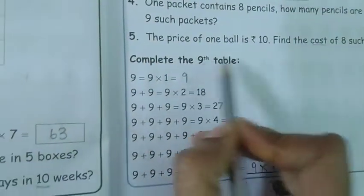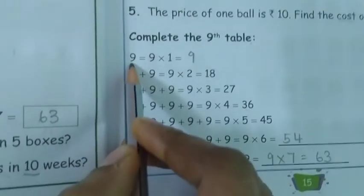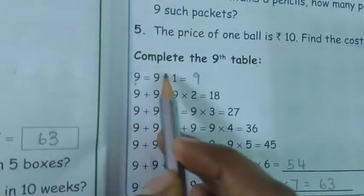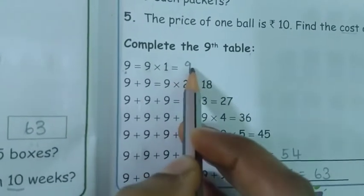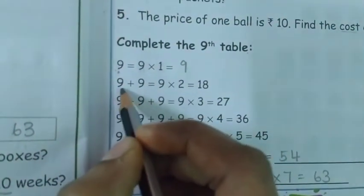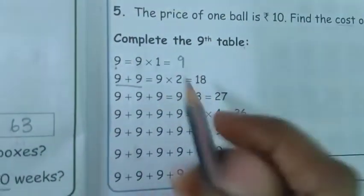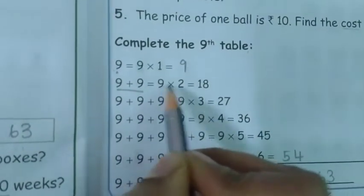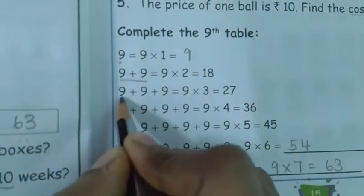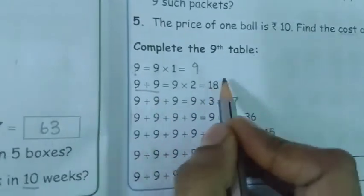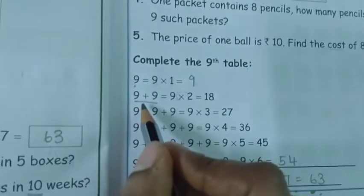Next, complete the ninth table. Here giving the number 9 only one time. 9 into one time — that means 9 ones are 9. Here, 9 plus 9, the number 9 giving two times. So 9 twos are 18. Next, we already learned that multiplication is the shortest form of repeated addition.